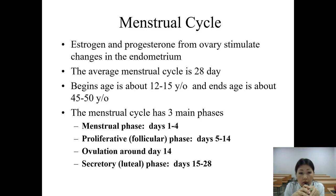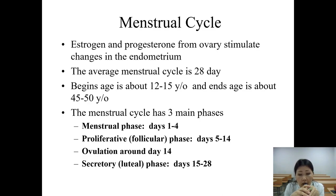Estrogen and progesterone from the ovary stimulate changes in the endometrium. The average menstrual cycle is 28 days, begins at about 12 to 15 years old, and ends at about 45 to 50 years old. The menstrual cycle has three main phases: the menstrual phase (days 1 to 4), the proliferative or follicular phase (days 5 to 14, with ovulation around day 14), and the secretory or luteal phase (days 15 to 28).